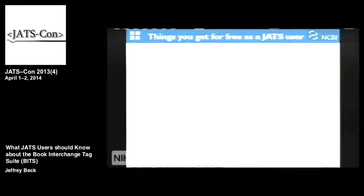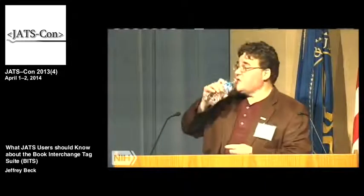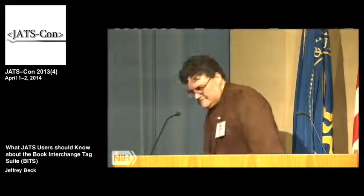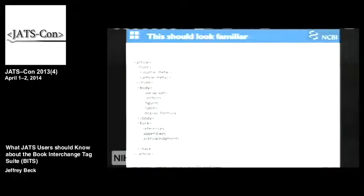Here are things you get for free as a JATS user. This should look familiar: we have an article with a front, a body, and a back. The body has paragraphs, sections, figures, tables, and display formulas. The back has references, appendices, and acknowledgments. There's metadata in the front. If you understand how an article body and back work, you're essentially going to understand how a book part — let's say a chapter — works.